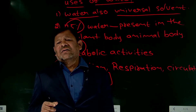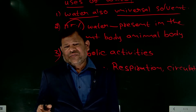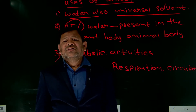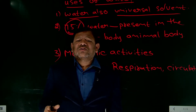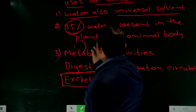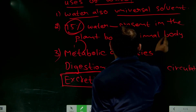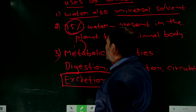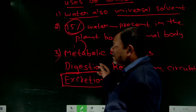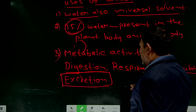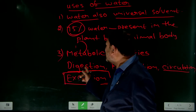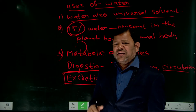There is no light without water. Similarly, there is no water — there are no plants and animals. In plants and animals, 75% of the body is made up of water. Metabolic activities like digestion, respiration, circulation, and excretion all occur in the presence of water only.